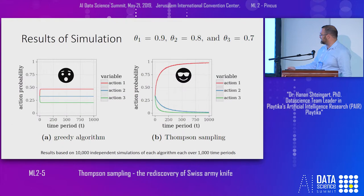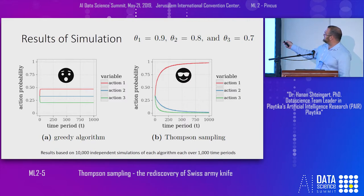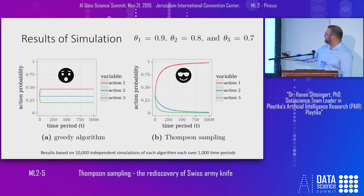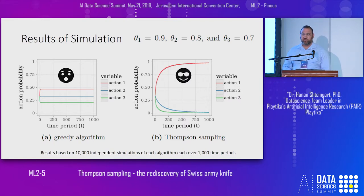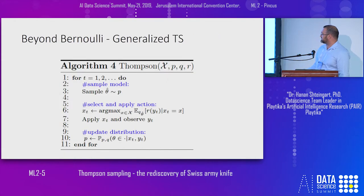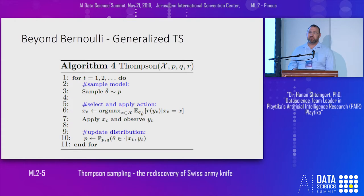Let's assume three levers with probabilities to win of 0.9, 0.8, and 0.7. When comparing greedy versus Thompson Sampling, you can clearly see that Thompson Sampling selects almost 100% of the time the best optimal action through time, while the greedy algorithm is stuck at very low performance — and even adding epsilon-greedy doesn't work as well as Thompson Sampling.